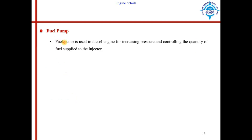In diesel engines, fuel pumps are used. In a diesel engine, air is first taken inside the cylinder and then compressed so that its temperature increases. The temperature of the air is raised such that as soon as the diesel comes into contact with that hot air, it burns. The fuel pump is used to insert the fuel inside the cylinder in diesel engines — it increases pressure and controls the quantity of fuel supplied to the injector.